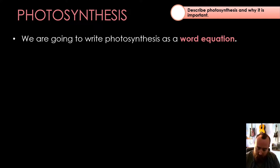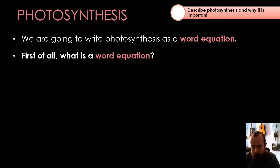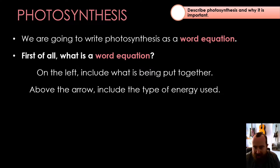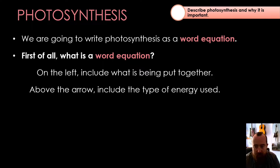So we need to look at the word equation for photosynthesis — how the bits and pieces are put together into an equation using the words. On the left-hand side, we put the things that are being put together, the reactants. We have an arrow showing which direction the reaction happens, and above that arrow we include the type of energy being used — in this case, light energy. On the right-hand side, we put what is being created.